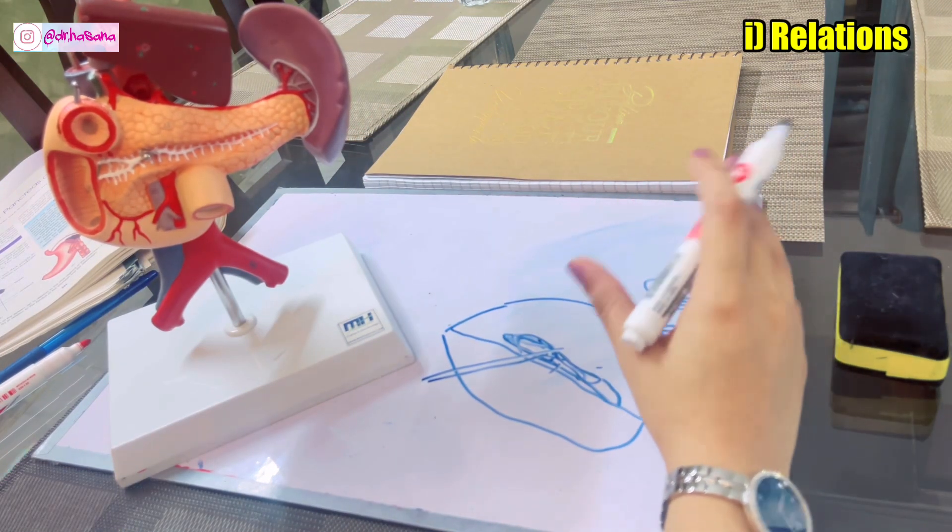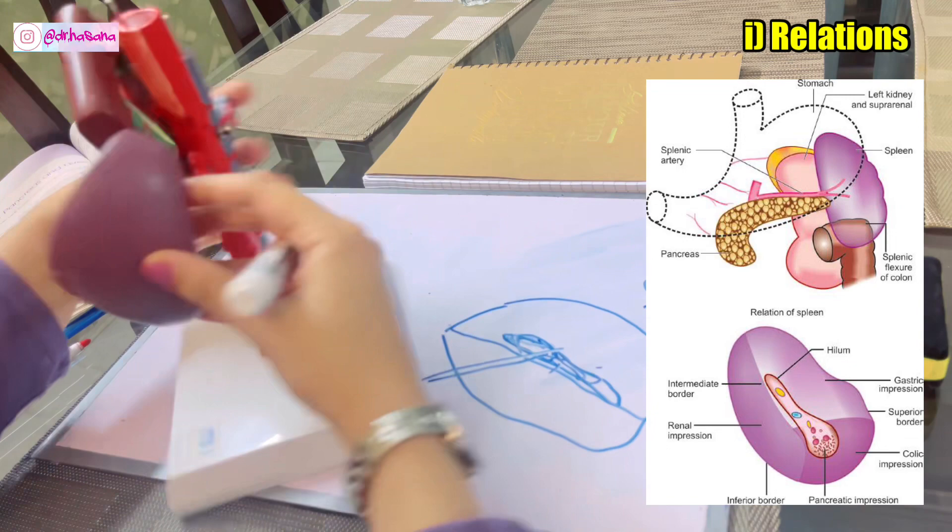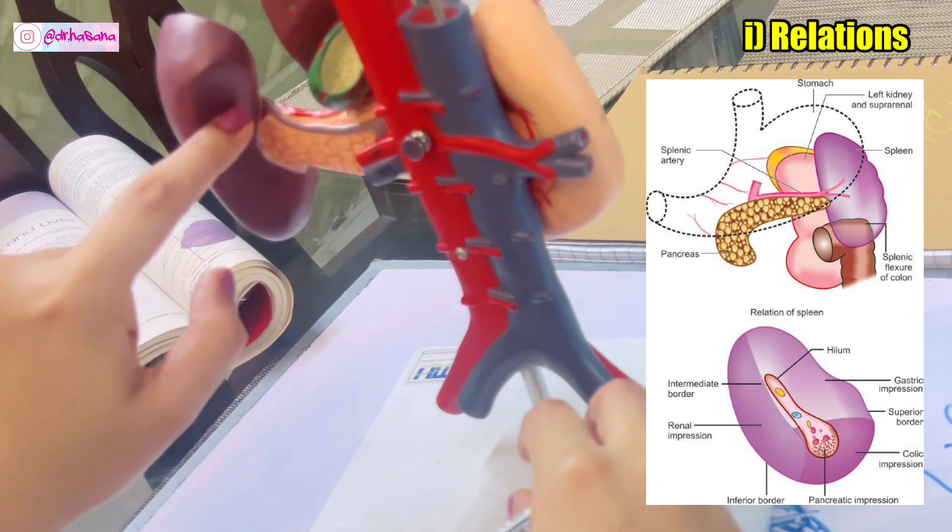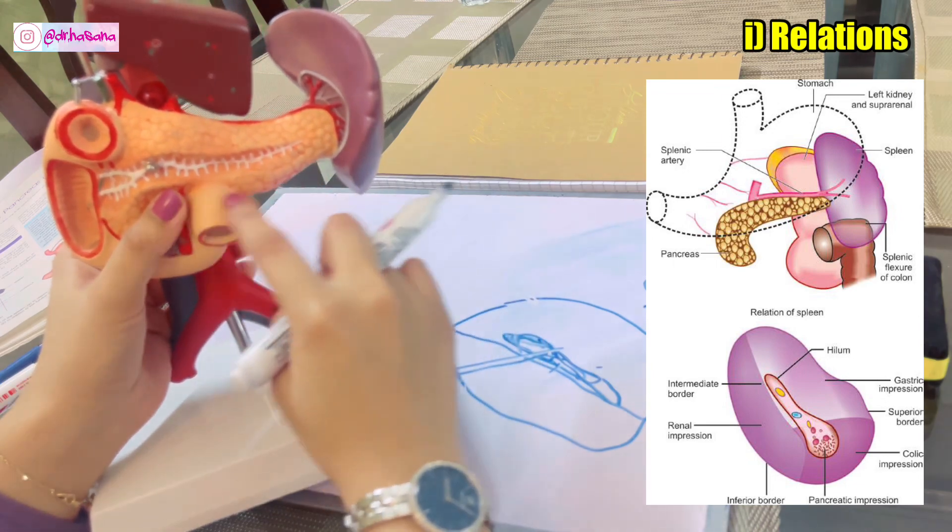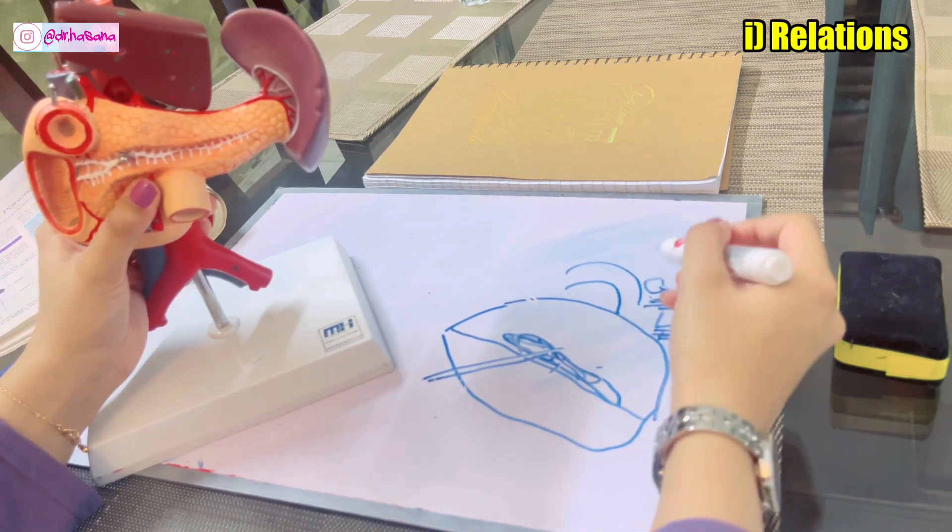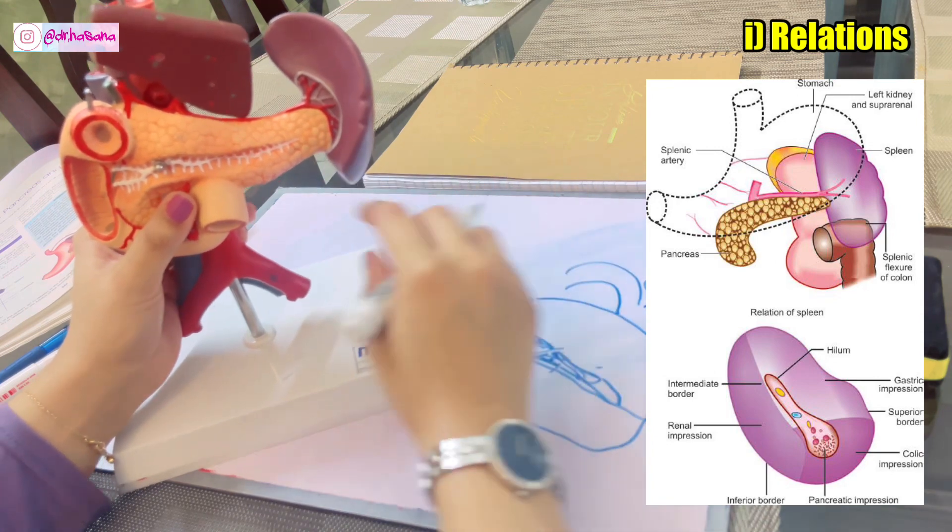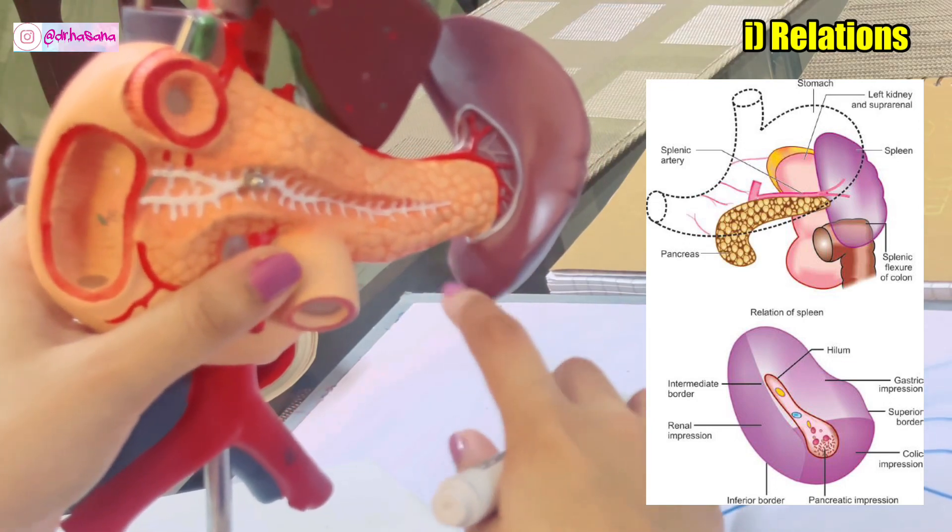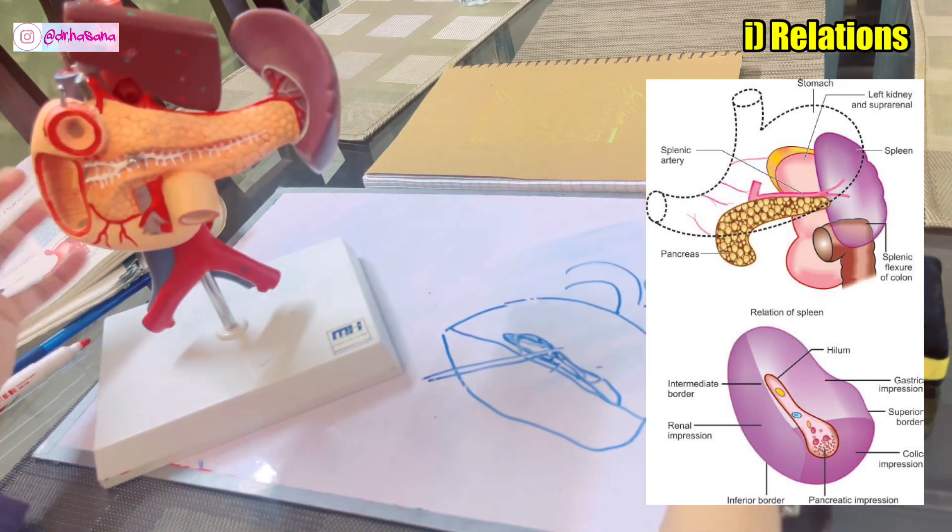Now let's talk about the relations of the spleen with the viscera. Between the superior-intermediate border is the gastric impression for the fundus of the stomach. Posteriorly, between the inferior border and the intermediate border is the kidney impression for the left kidney. What lies over here is the transverse colon, especially the splenic flexure of the colon. This splenic flexure is causing a colic impression right at the anterior end. Another impression at the hilum is the pancreatic impression.